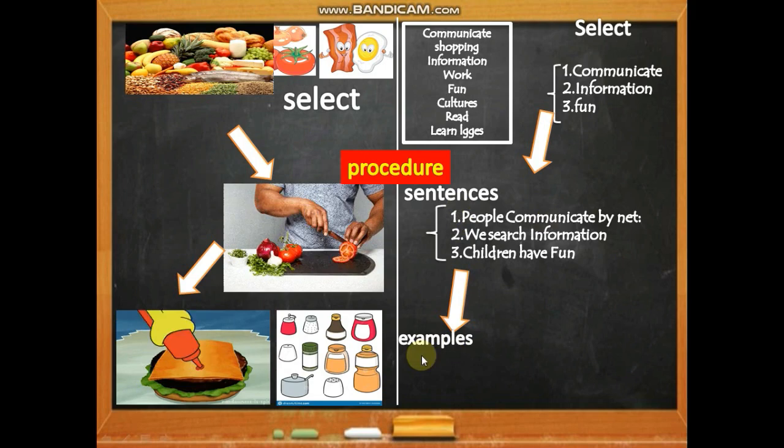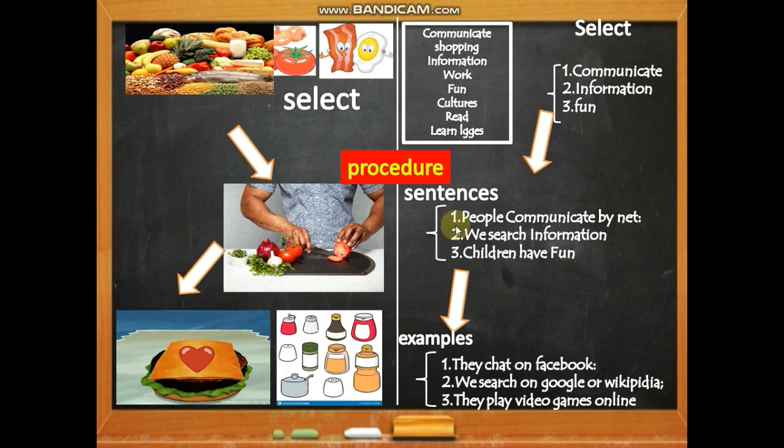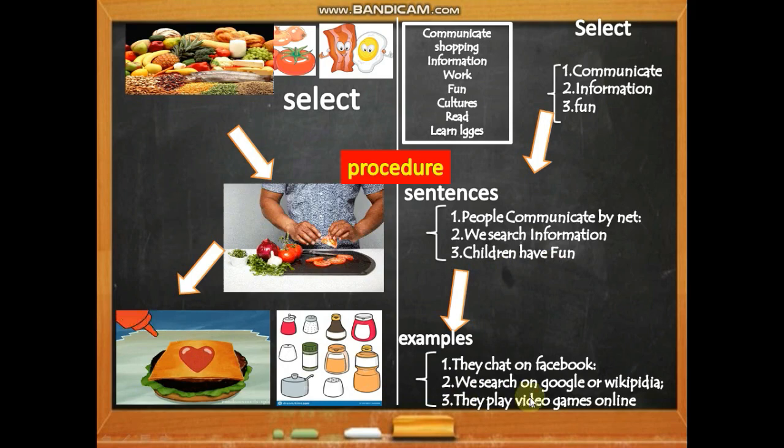If you just write a sentence without an example, it's not a good paragraph. For example: 'People communicate by the internet' — example: 'They chat on Facebook.' 'We search information' — example: 'We search on Google or Wikipedia.' 'Children have fun' — example: 'They play video games online.' Keep the examples simple and clear.